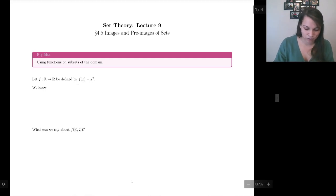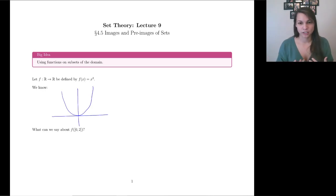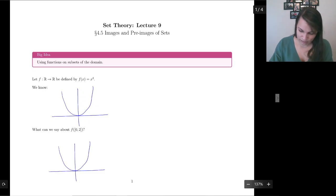What do I mean by that? Let's consider our good old function x squared. We know things about x squared. We know, for instance, what it looks like. It looks like this. So my question to you is, what can we say about the interval [0, 2]? Like, where does that get mapped to?